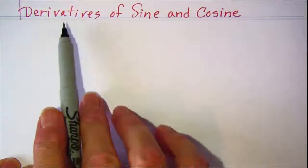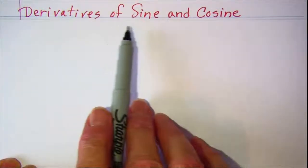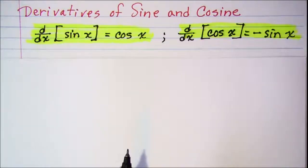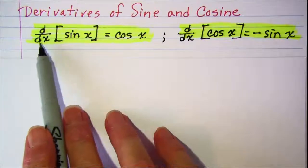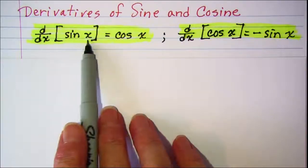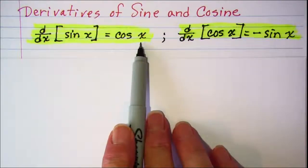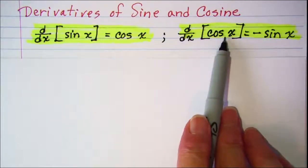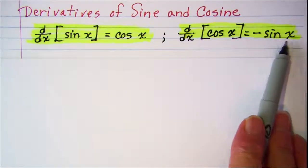In this video we'll be discussing the derivatives of sine and cosine. The rules are: the derivative with respect to x of sine x is cosine x, and the derivative with respect to x of cosine x is negative sine x.